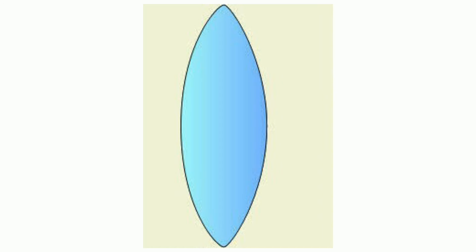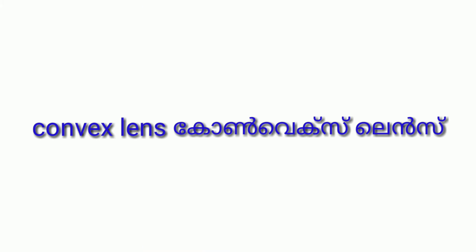Maddiyabagam kanan kooediyatum makkukul kanan kooediyatumaya lens — the center portion is thick, aana, and the edges are thin. These lenses are known as convex lens.